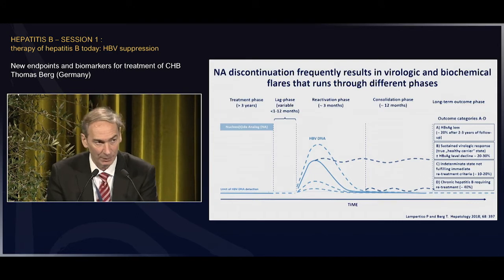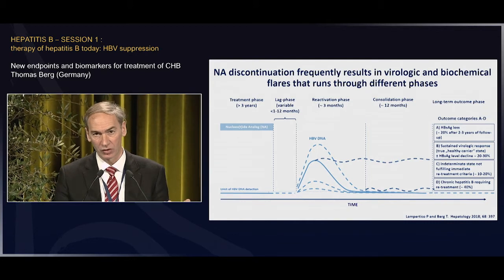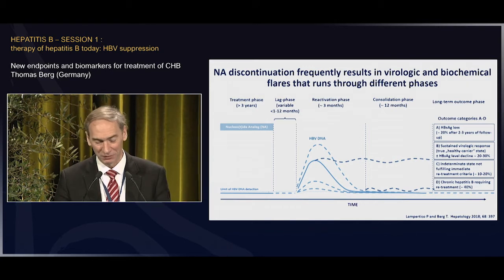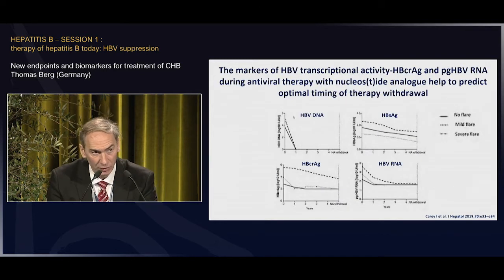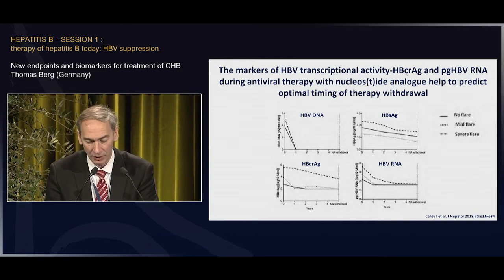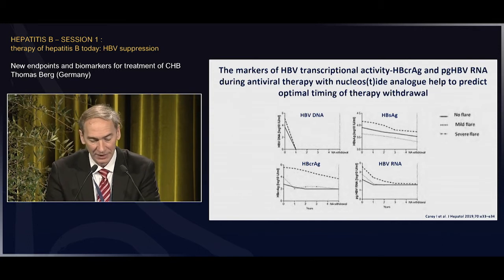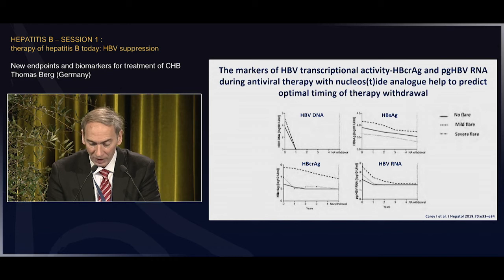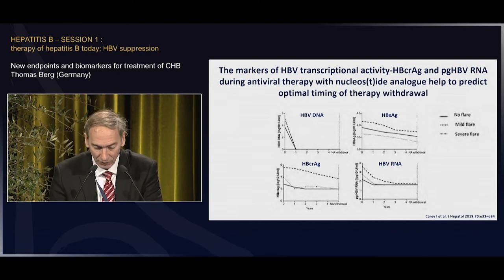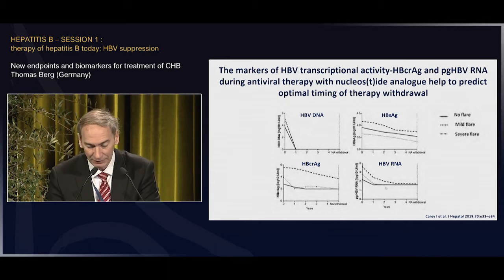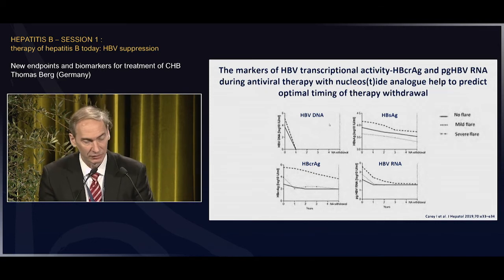There are not many data, but more are coming. If you stop long-term NUC treatment, the HBV infection may run through different phases — there may be some reactivation, not in all patients. Some will enter a true inactive carrier state or even lose HBsAg. It has been shown in some studies that markers of transcriptional activity like core-related antigen and pre-genomic HBV RNA are able to predict the optimal timing of therapy withdrawal. You see patients with no flare, mild flare, or severe flare after stopping. For HBV DNA it's difficult to judge what will happen when you stop, and for HBsAg it's also less clear. But those starting with low core-related antigen levels or lower HBV RNA levels and maintaining low levels have a relatively low risk of clinical reactivation.